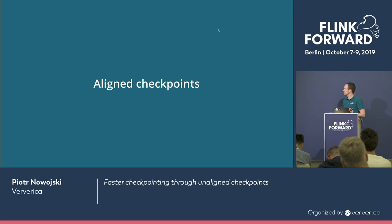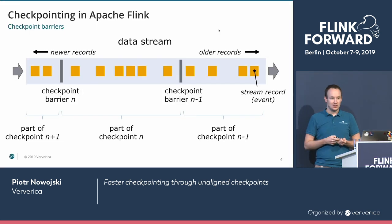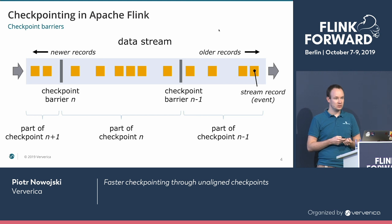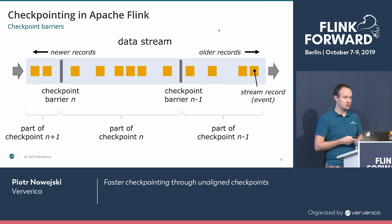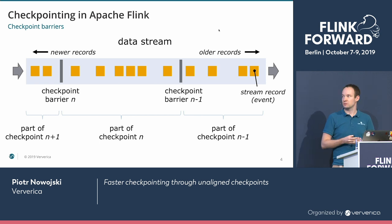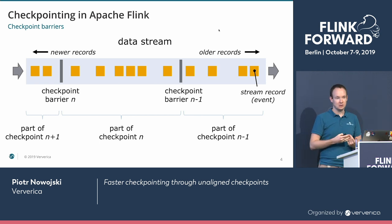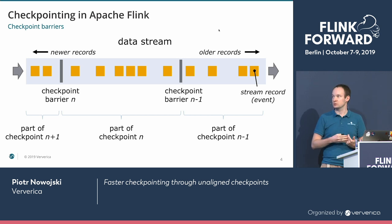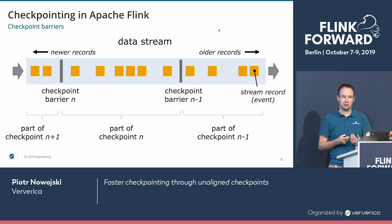So let's start with aligned checkpoints. As you probably know, checkpointing in Flink revolves around the idea of checkpoint barriers. Checkpoint barriers are meta-markers that are flowing within your data stream, and for checkpoint barrier N, all records preceding checkpoint barrier N are considered part of this checkpoint.